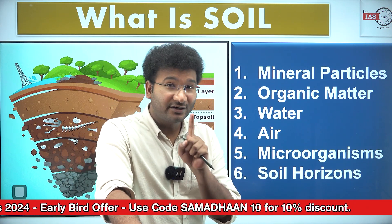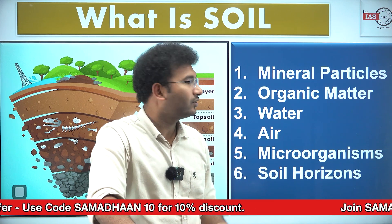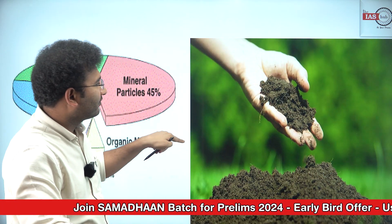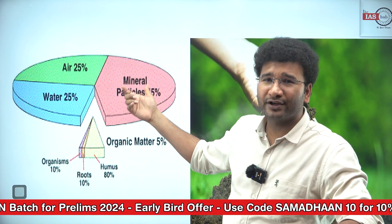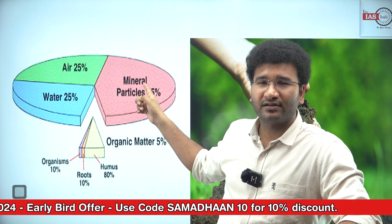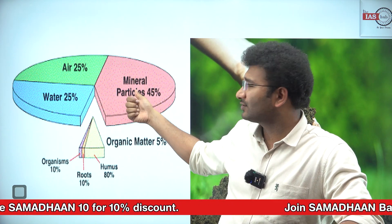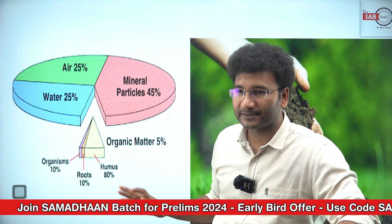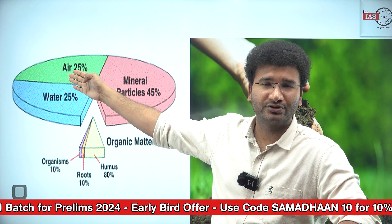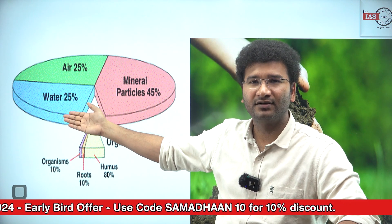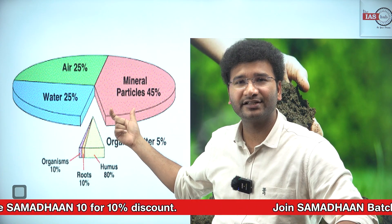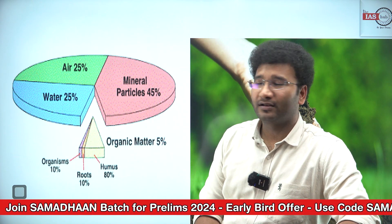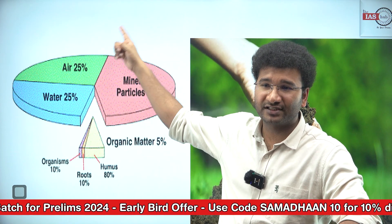This is an area where UPSC has asked questions — specifically about the order or hierarchy of these soil constituents. If you look into the constituents of soil, the highest constituent is mineral particles, which constitute 45%. Air constitutes 25%, water contributes 25%, and the remaining 5% is humus, roots, and organic matter. This is a high-potential area where a question can be asked.